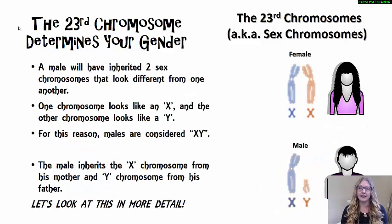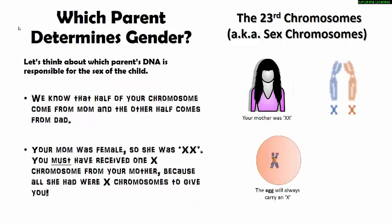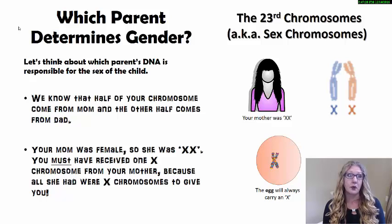A male will have inherited two sex chromosomes that look different from one another. One chromosome appears like an X and the other appears more like a Y shape — for this reason we consider males XY for their 23rd chromosome. A male inherits the X chromosome from his mother and the Y chromosome from his father. Let's look at this in a little bit more detail.